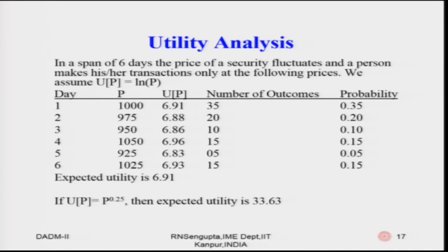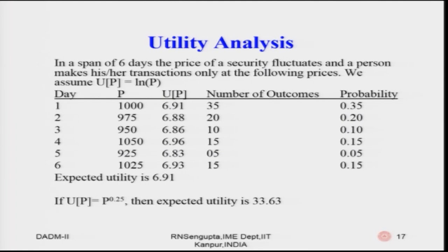Consider a third example: over a span of six days, the price of a security fluctuates and a person makes transactions only at those prices. We assume the utility function to be logarithmic — the log of the price. The days are 1 through 6, and the prices are 1000, 975, 950, 1050, 925, and 1025 rupees. In the third column we find the utility, which is the log of each price.